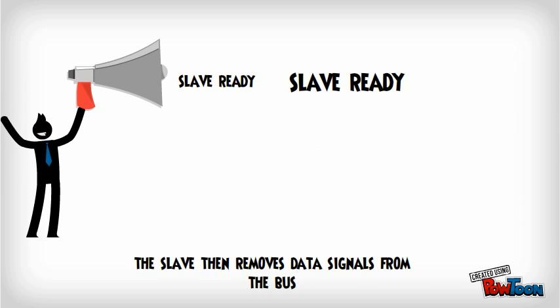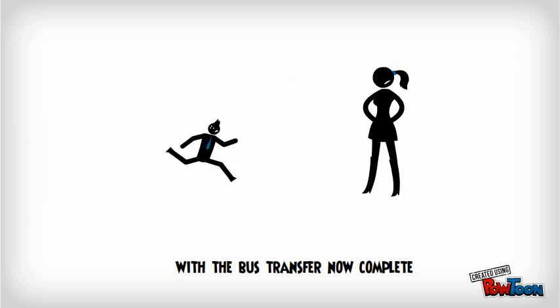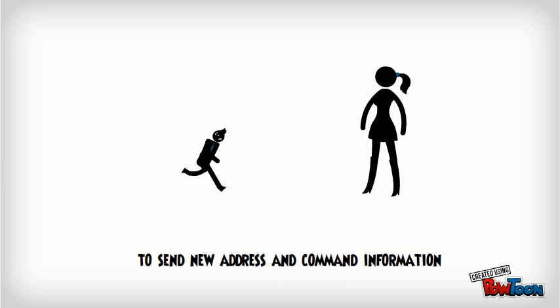The slave then removes data signals from the bus and returns to slave-ready mode. With the bus transfer now complete, the master will then call upon the slave again to send new address and command information.